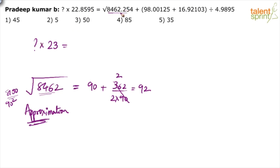So we can say the first term on the right hand side here is 92. The square root of 8462.254 is 92 plus. Look at this: 98.00125 can be approximated to 98 and this 16.92103 can be taken as 17. So how much is 98 plus 17? 98 plus 17 would be 115. 115 divided by 4.9895 can be taken as 5.